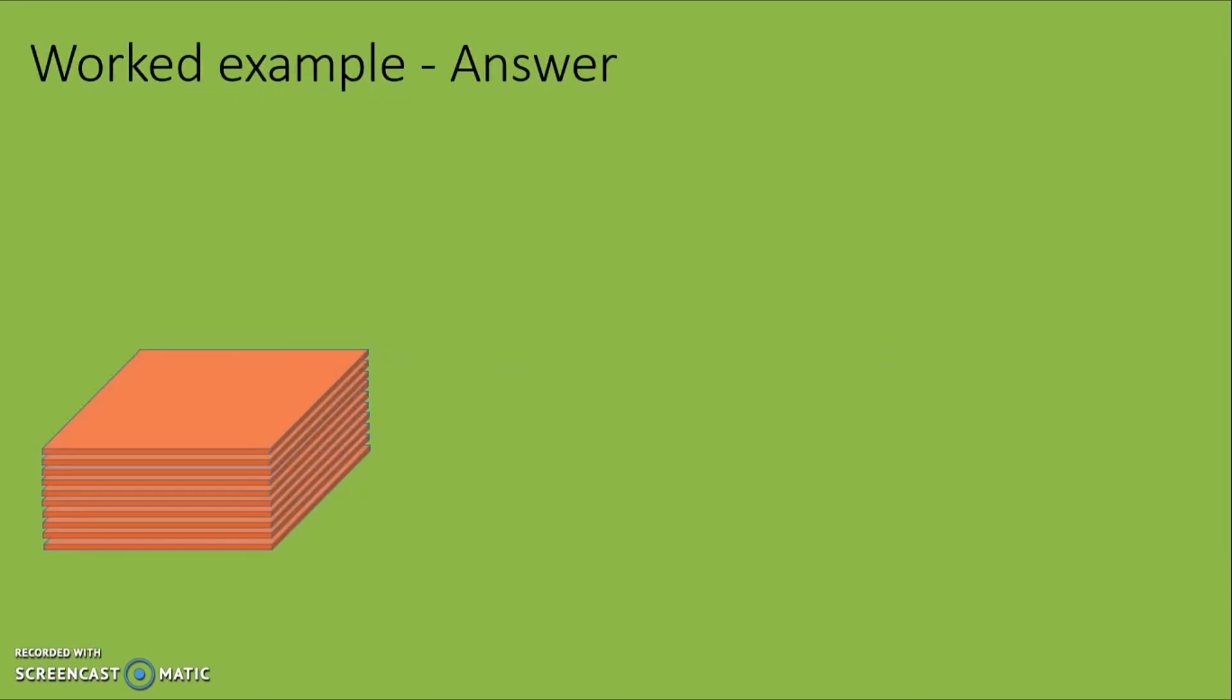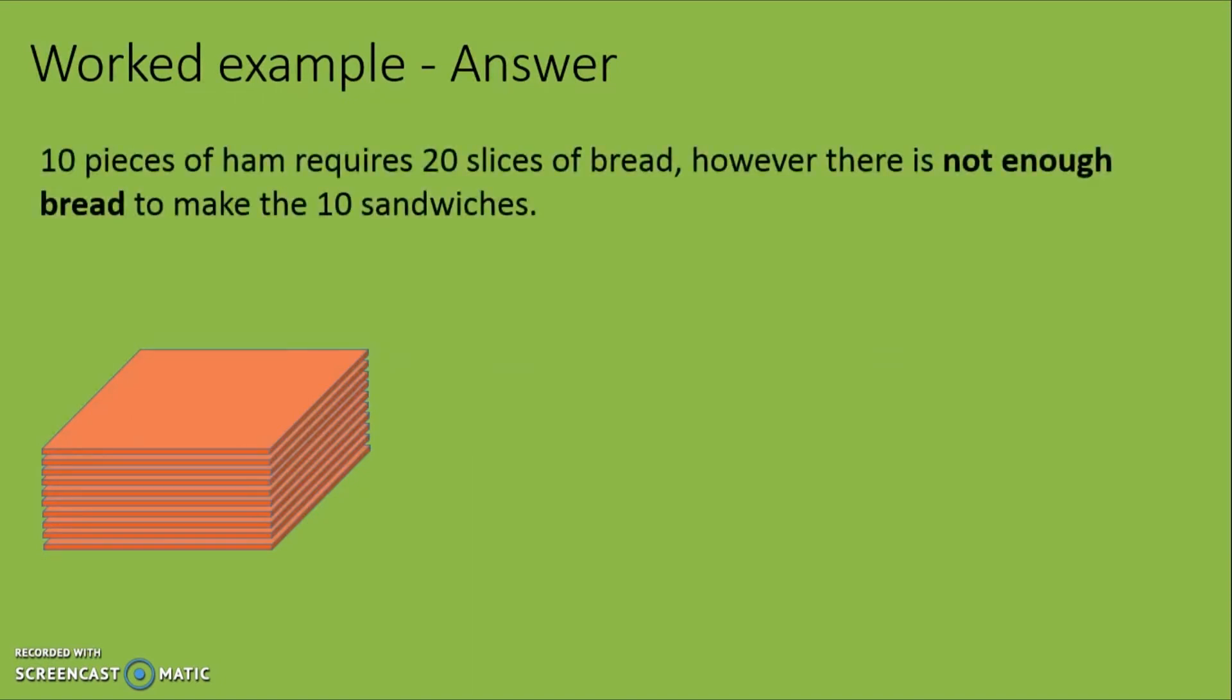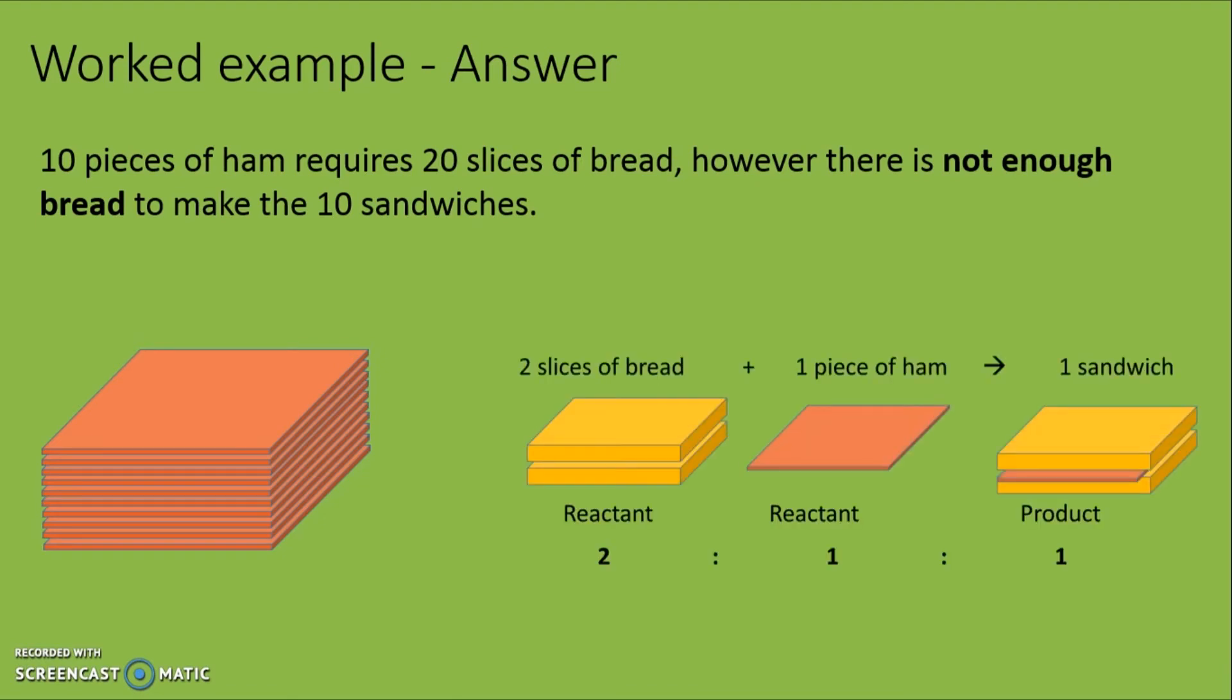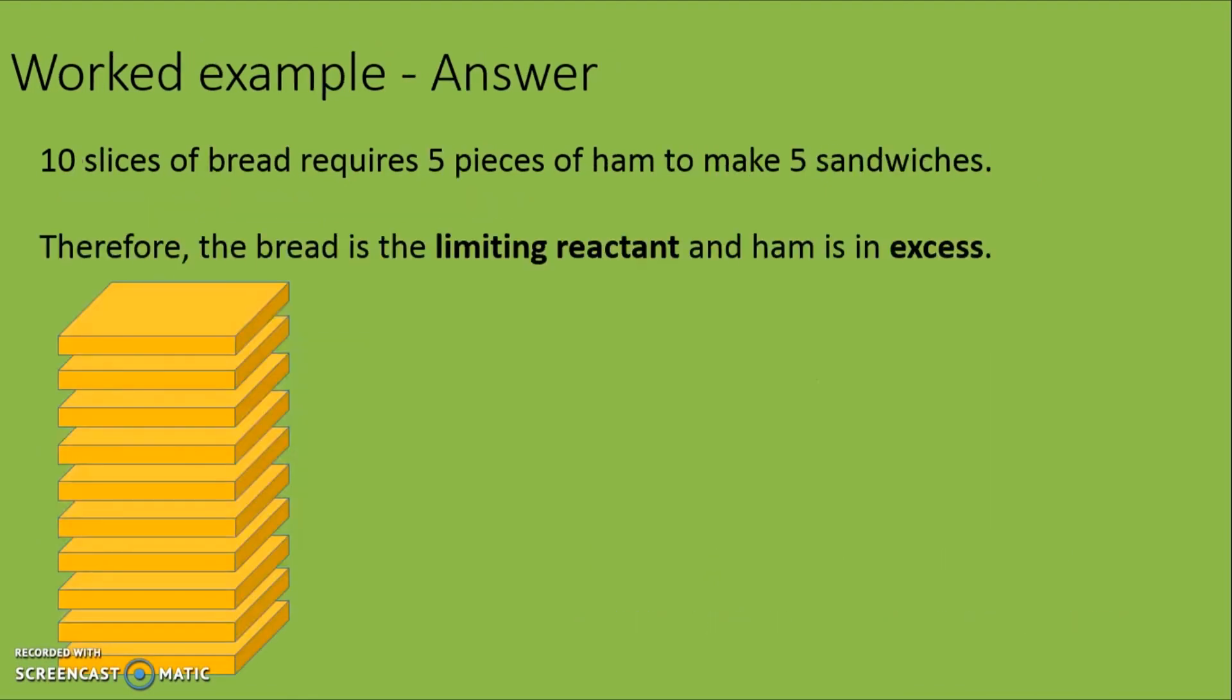With 10 slices of ham, he can make 10 sandwiches. But in order for him to do that, he requires 20 slices of bread which is not enough. He is limited by the 10 slices of bread that he has. And with the 10 slices of bread, he could make a maximum of 5 sandwiches as each sandwich will require 2 slices of bread.